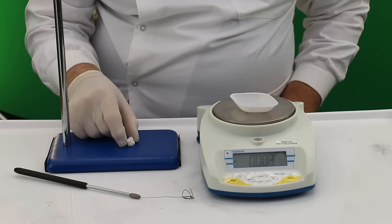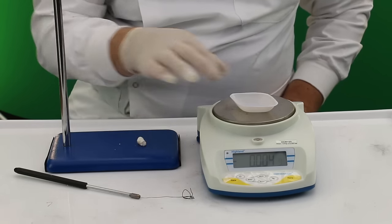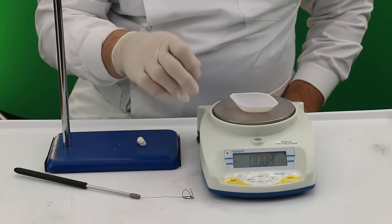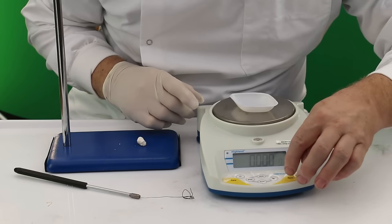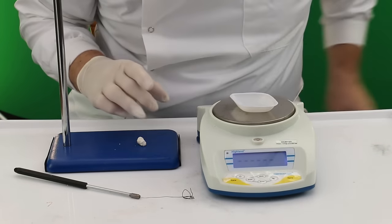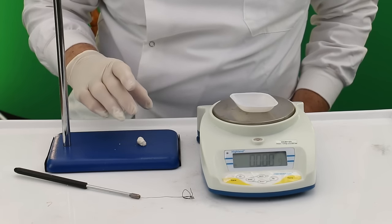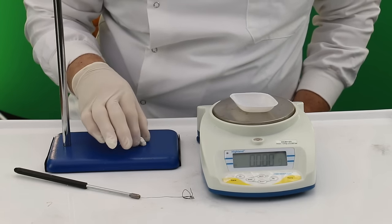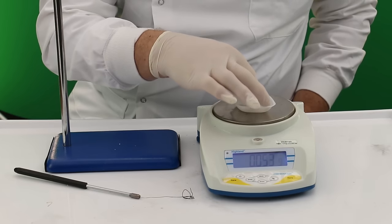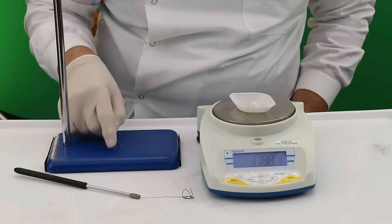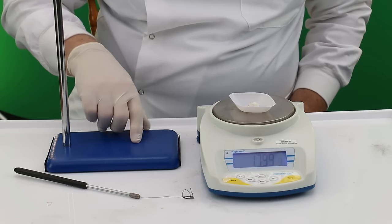Now we've allowed this to cool, we're going to place this in a weighing boat on the balance. So the first thing I need to do is ensure the balance is zeroed. And once the balance is zeroed, I can then put on the piece of calcium oxide to see what weight difference we've got.